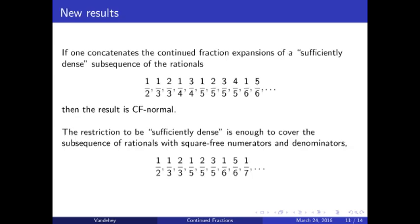The new results of my paper are very similar to the results of Copeland and Erdős. Instead of needing all of the rationals between 0 and 1, I show that a sufficiently dense subset works just as well. The restriction to be sufficiently dense is enough to cover, for example, the subsequence of rationals with square-free numerators and denominators. So notice that the number 4 never appears in this sequence because 4 is not square-free.